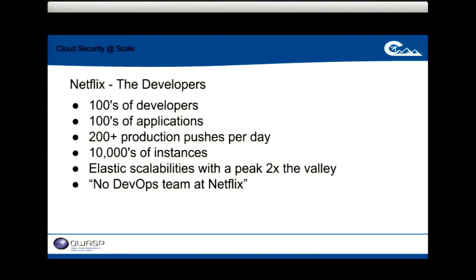Netflix is a media and entertainment company but we have a huge technical presence. We have hundreds of developers working on hundreds of applications. To the end user it's just Netflix, but on the back end every feature is essentially its own application. We deploy things horizontally and end up doing hundreds of pushes to production every day — whenever a developer is ready, they initiate the process to get their code publicly available.